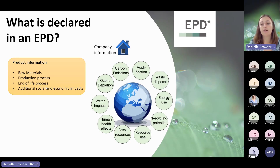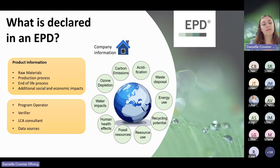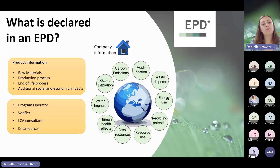The environmental impacts are declared in performance indicators, and this is just a representation of some of the indicators that can be declared. The PCR decides which indicators should be used in each EPD, so it depends on the product. Additionally, the EPD should also present the program operator — which in this case would be EPD International — the verifier, so the person or company who has verified the data in the EPD. It should also be declared if you have used an LCA consultant, and it should be clear where the data sources came from.